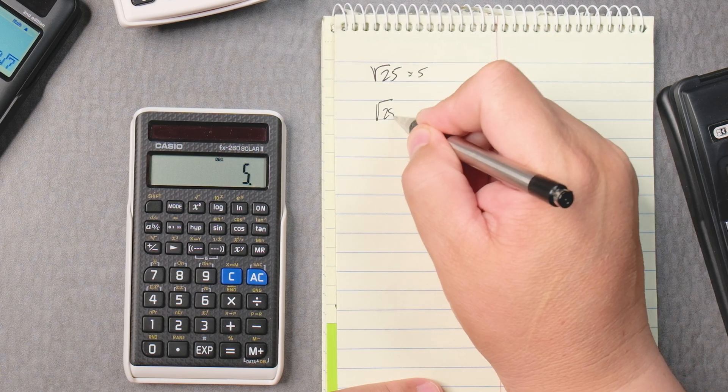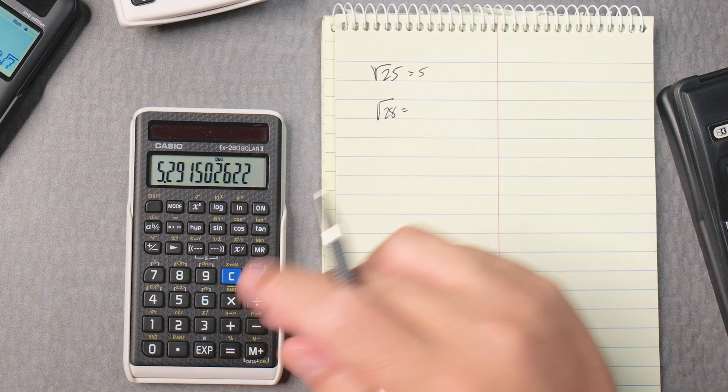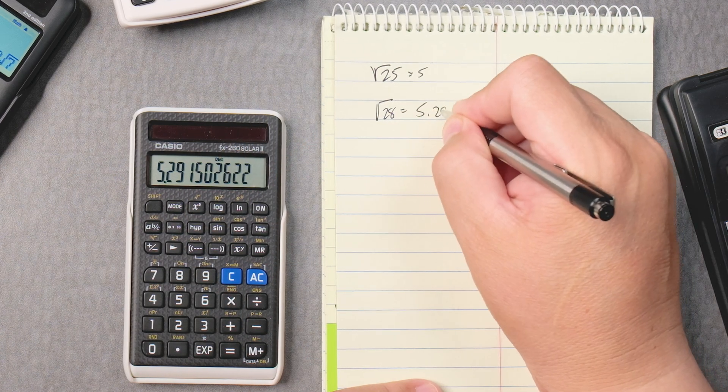Let's say I want to take the square root of 28, right? 28, shift x squared gives you an answer of 5.2915.